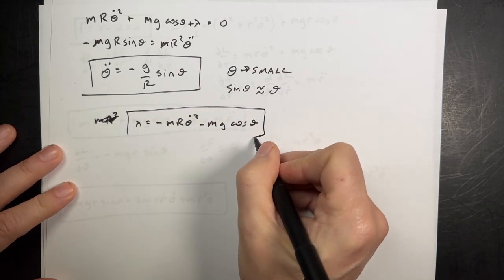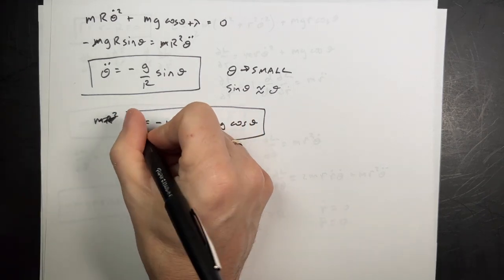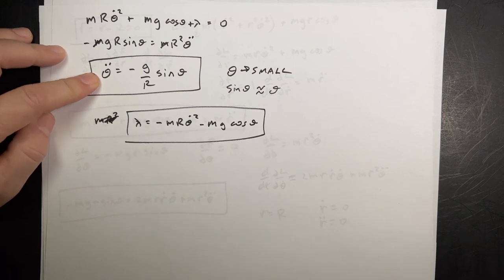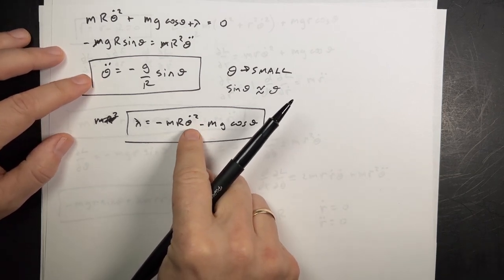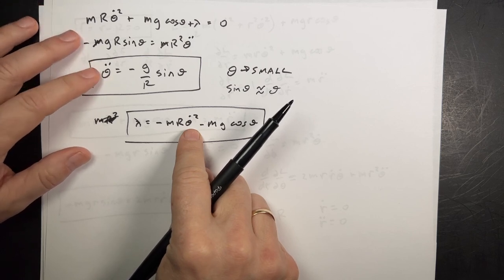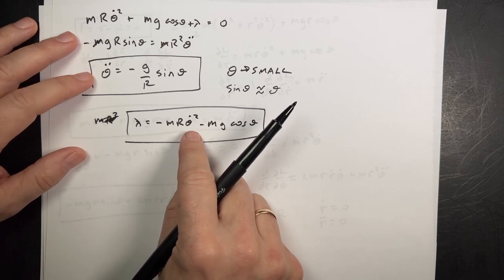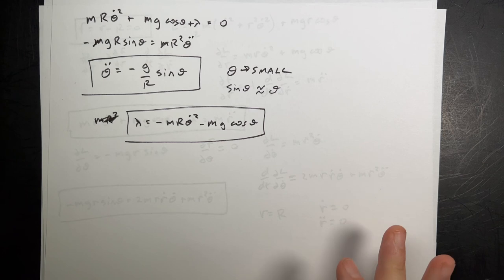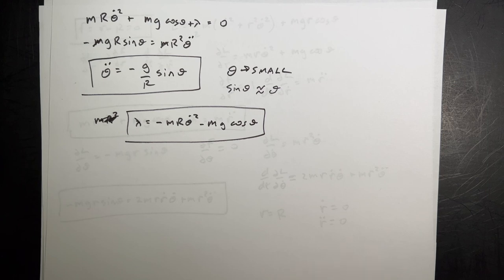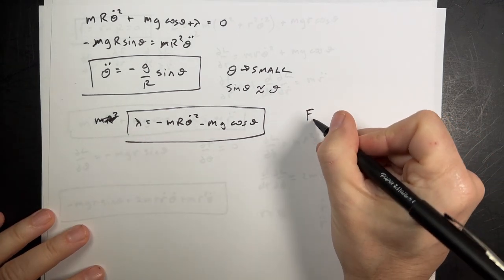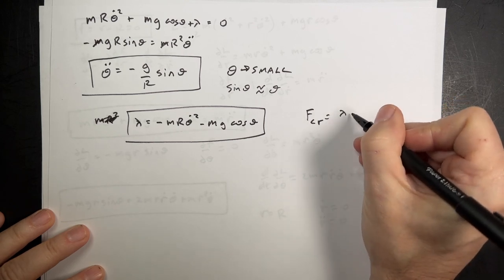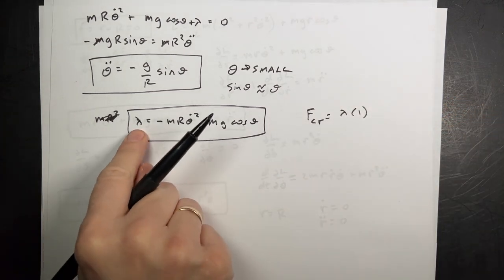There is a way to solve this analytically — you solve for theta dot and make assumptions — but it's messy and I don't want to do that. Instead I'm going to do it numerically to find lambda. The force of constraint in the r direction, f_c,r = λ · ∂f/∂r = λ · 1 = λ, which is the tension in the string.